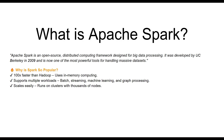So what is Apache Spark? Apache Spark is an open source distributed computing framework designed for big data processing. It was developed by UC Berkeley in 2009 and is now one of the most powerful tools for handling massive data sets. Before Apache Spark we had Hadoop, and Hadoop was slow. Apache Spark is 100 times faster than Hadoop because it uses in-memory computing, processing data in memory instead of slow disk-based operations.